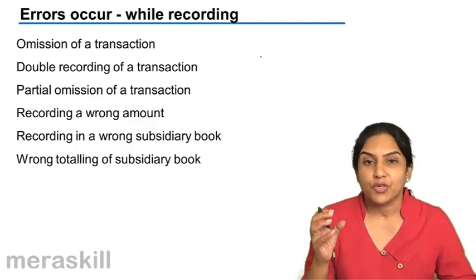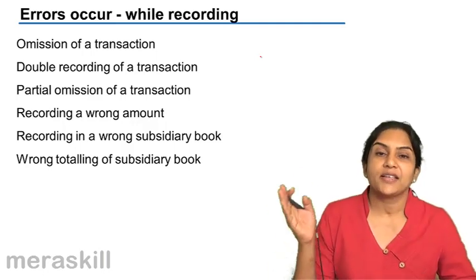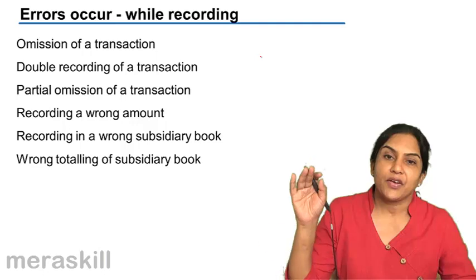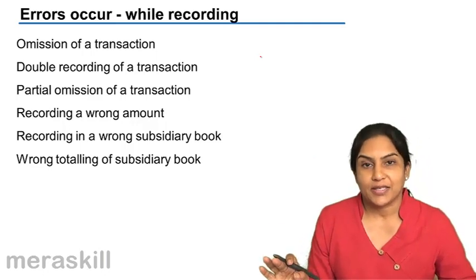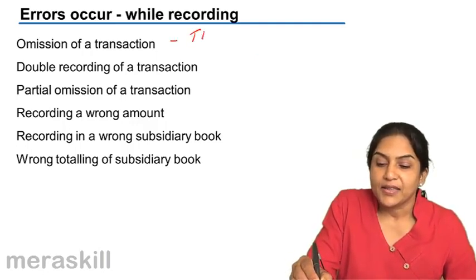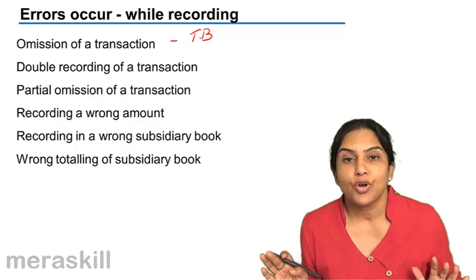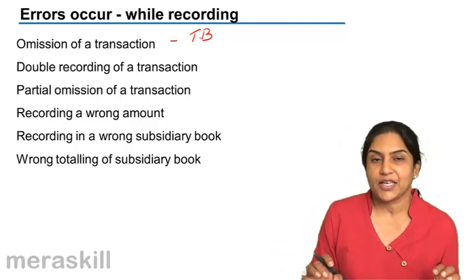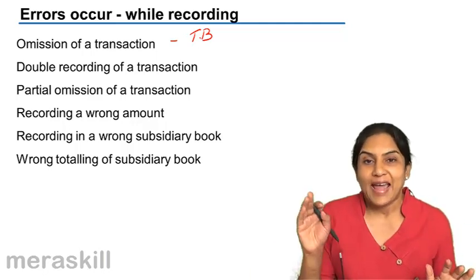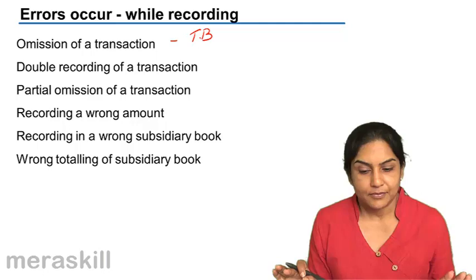When a purchase transaction is entirely omitted, neither is the purchase account affected nor is X's account affected. There is less debit to purchases and less credit to the creditor X's account. In a mistake like this, the trial balance will normally tally, because the purchase is not recorded and the creditor is also not recorded. Two accounts are wrong, but the trial balance will agree.